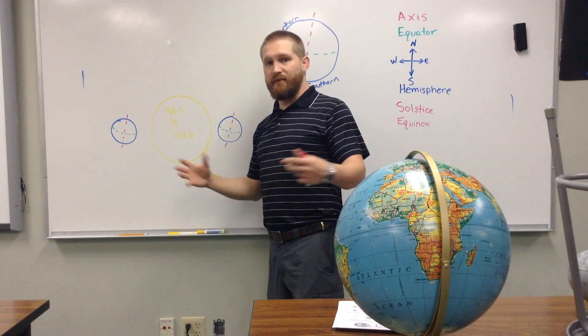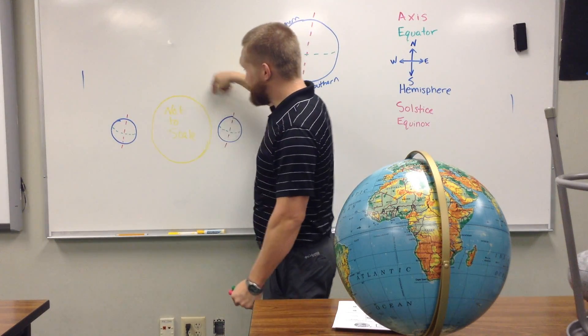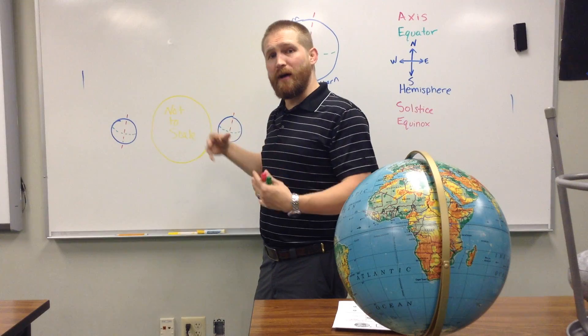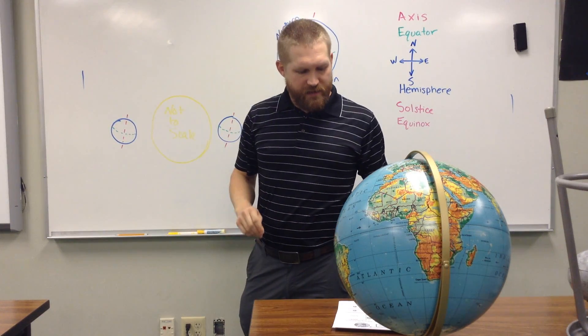So, we can imagine here's the sun, obviously not to scale. Here's the earth. It's tilted on its axis. It takes 365 days to make it around the sun. And so, how does this determine what seasons are?